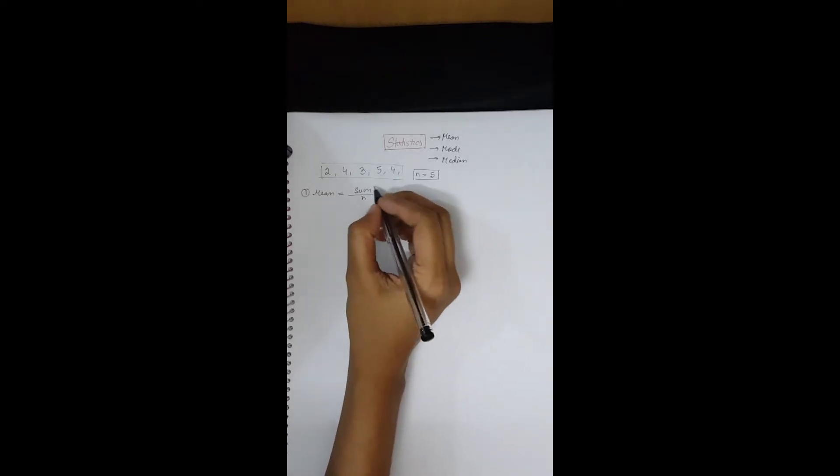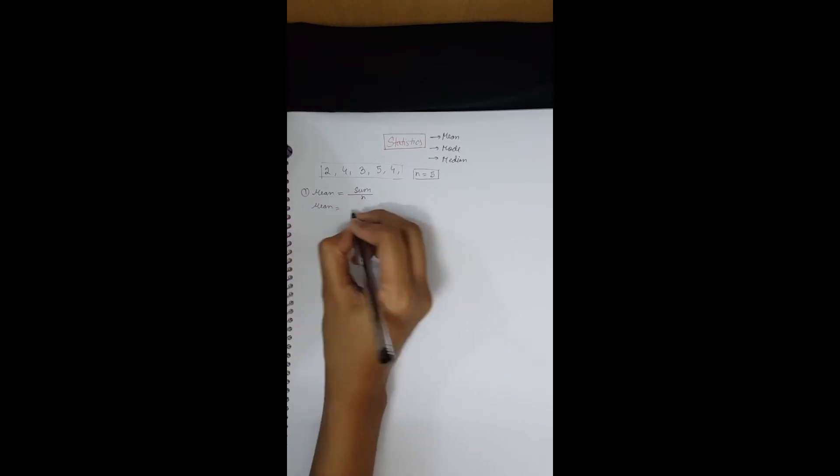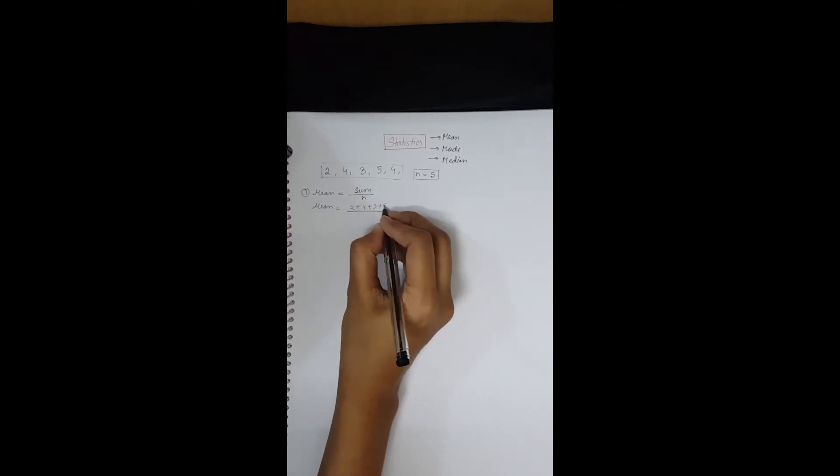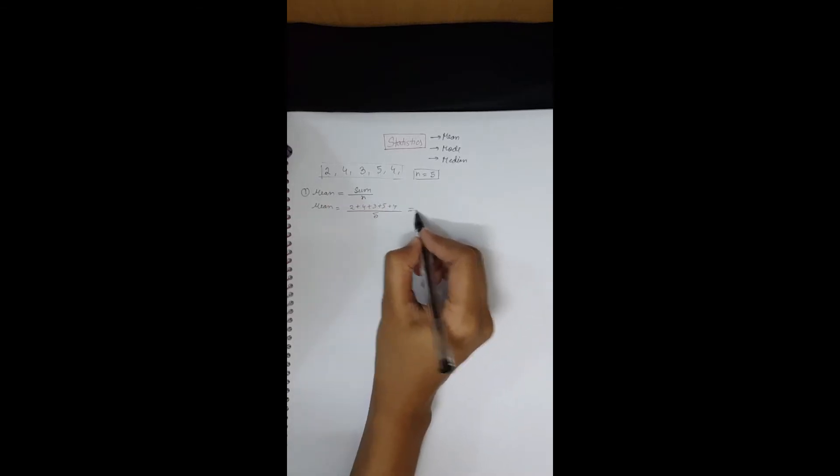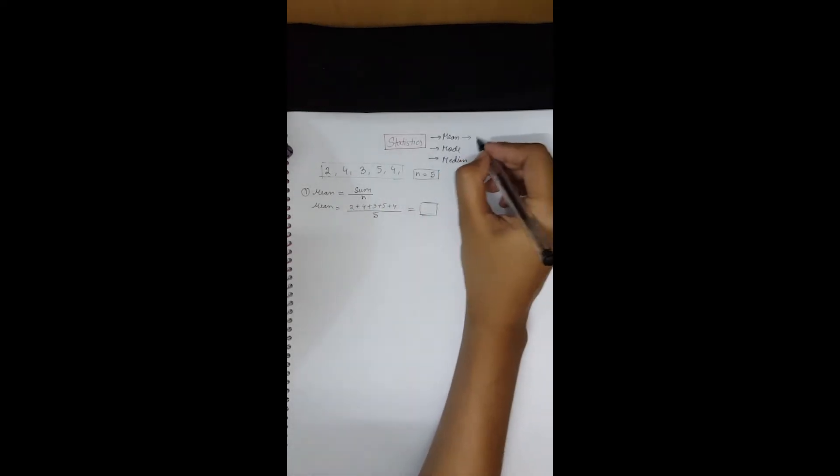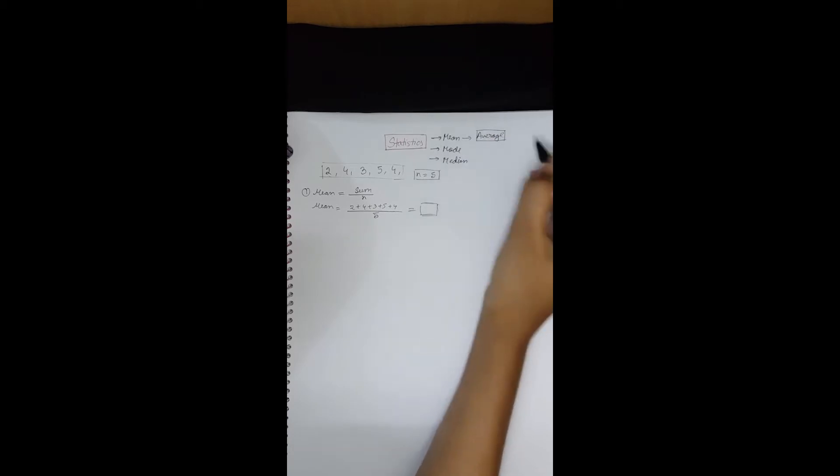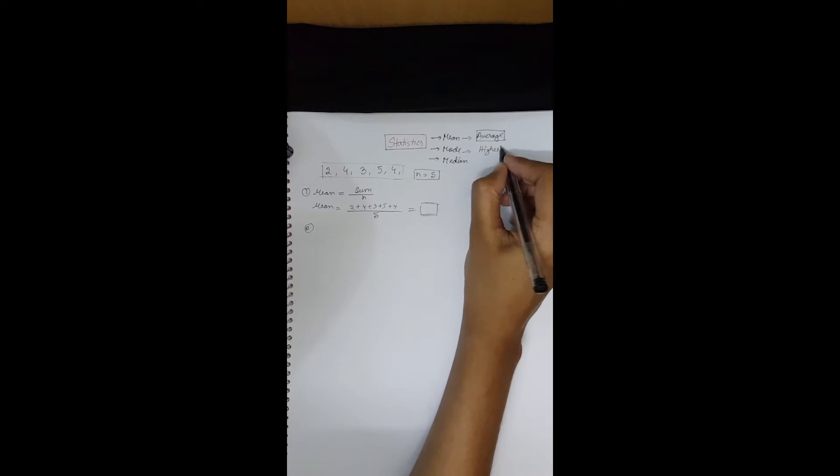Sum means you have to add all the numbers. So in this case, mean equals 2 plus 4 plus 3 plus 5 plus 4, divided by 5. This will give you the mean. Mean is basically the average of the given data.